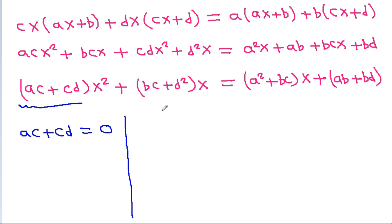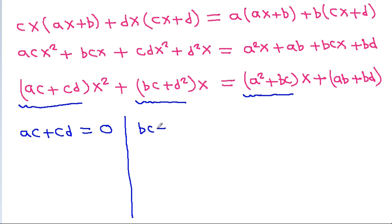On the left-hand side the coefficient of x is bc + d², and on the right-hand side the coefficient of x is a² + bc. That means bc + d² = a² + bc, so d² = a².